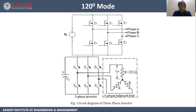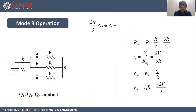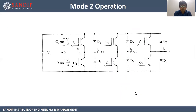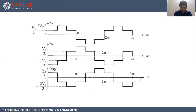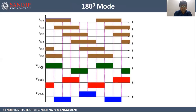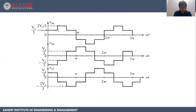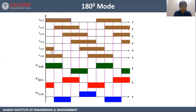This three-phase voltage source inverter operates in 180-degree mode and 120-degree mode. We have just seen 180-degree mode. Once we have the values of Van, Vbn, and Vcn for each mode, we plot them. Then to find Vab, Vbc, and Vca: Vab = Van − Vbn, so we subtract the magnitudes for each mode. Doing this for all modes and plotting gives us the complete waveform graph for 180-degree mode.